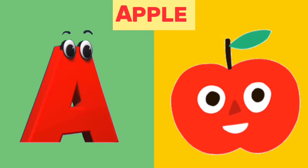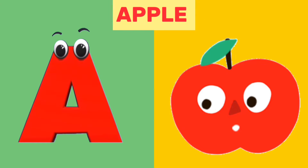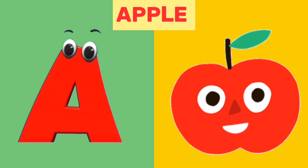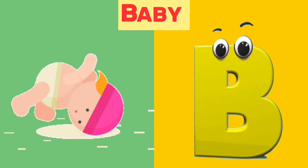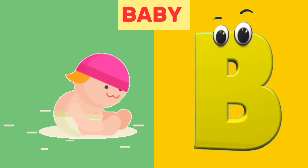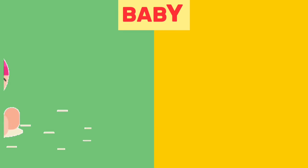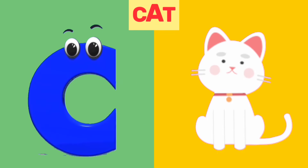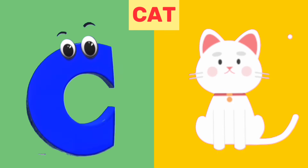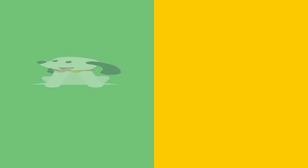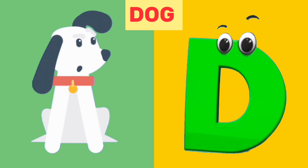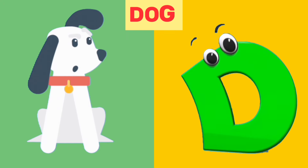A is for apple. A, apple. B is for baby. B, baby. C is for cat. C, cat. D is for dog. D, dog.